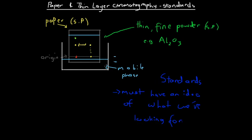So when using standards, we put a dot of the solution we're testing on the origin, and a dot of the pure substance we're looking for next to it. If a similar spot appears on the chromatogram from both the pure sample and the test sample, that indicates the substance we're testing likely contains the component we're looking for.